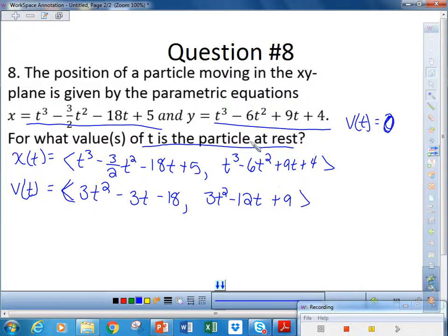So, to find when it's at rest, both the x component and the y component must be zero. The particle is at rest when both x prime of t is zero and y prime of t is zero. When both of those are zero, then the particle is at rest. So, I have to take the x component and set it equal to zero.